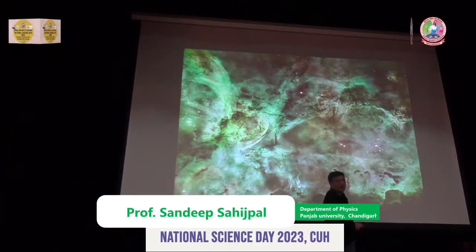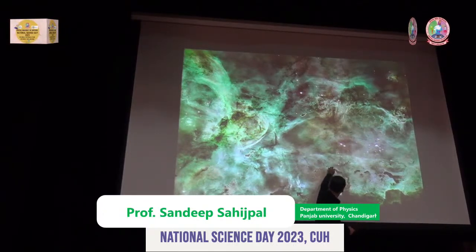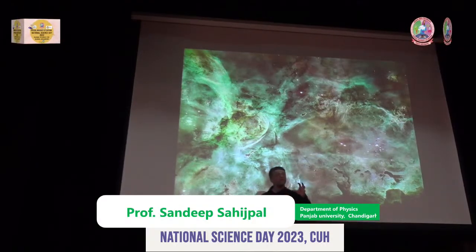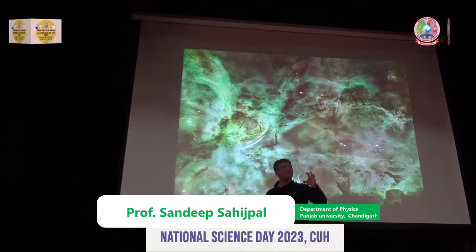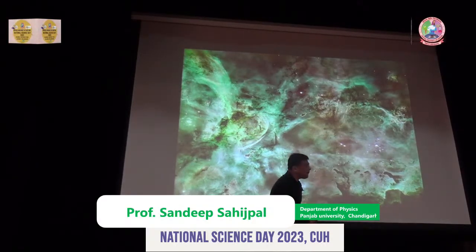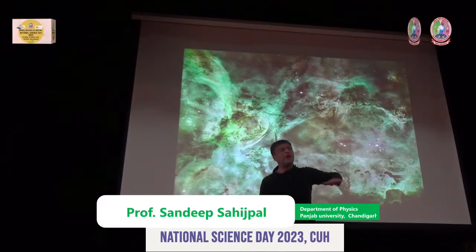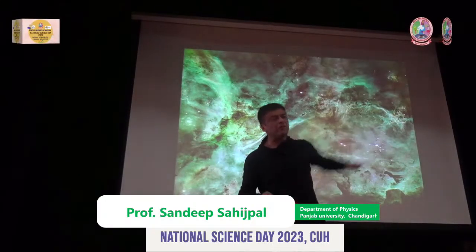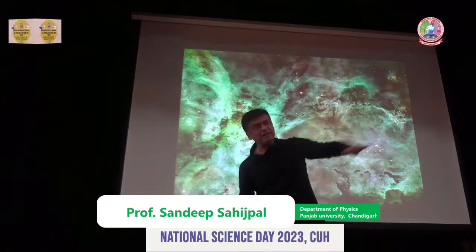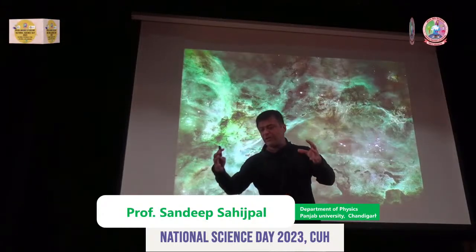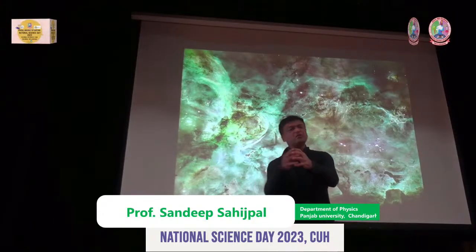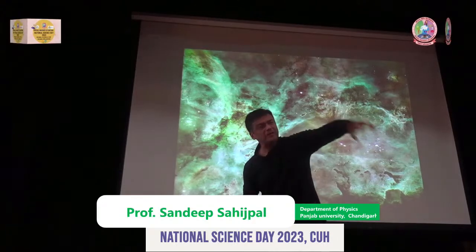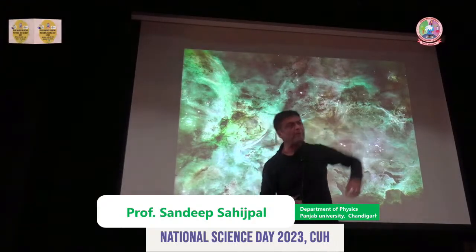Stars are formed from the gravitational collapse of molecular cloud cores — small dense cores. Whenever a star is formed, some amount of gas and dust is left around it. This gas and dust eventually accretes and accumulates together, resulting in the formation of planets.